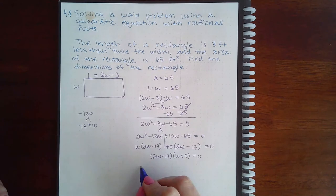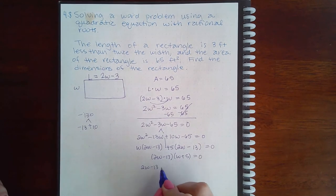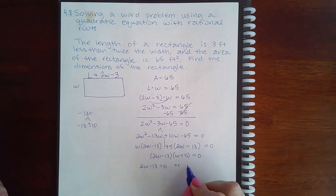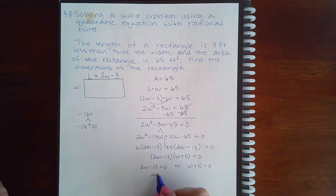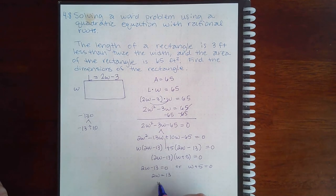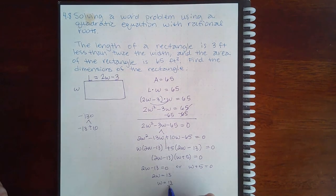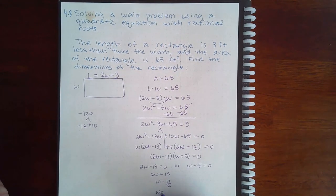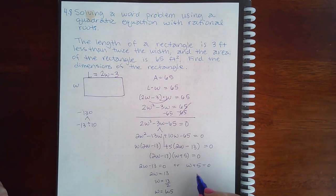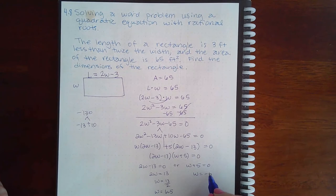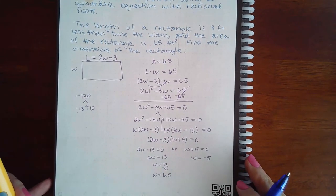So then I have 2w minus 13 equal to 0, or w plus 5 equal to 0. Here if I add 13 on both sides and then divide by 2, I get 13/2 or we could also say 6.5. Here if I minus 5 on both sides, I get negative 5.